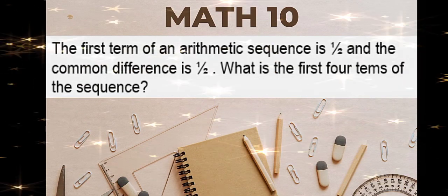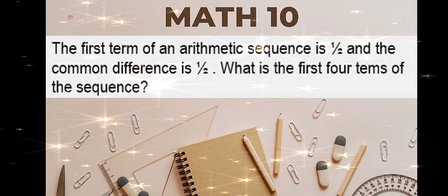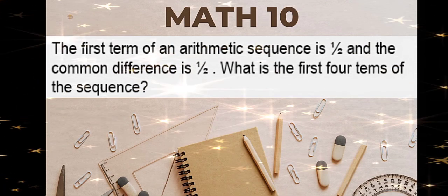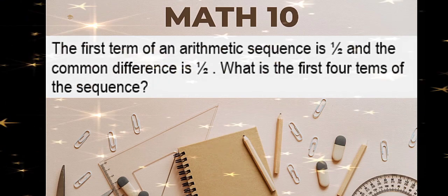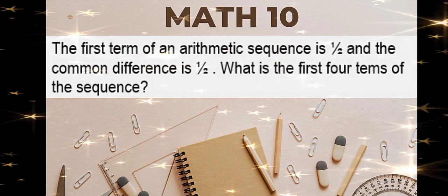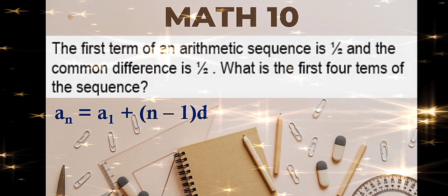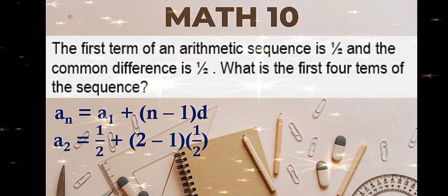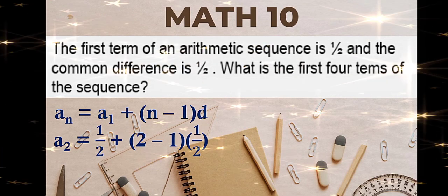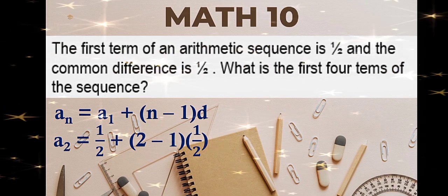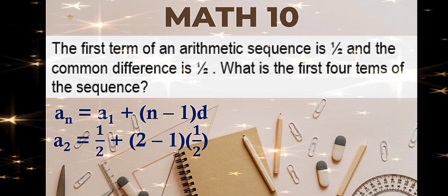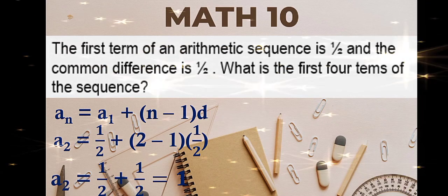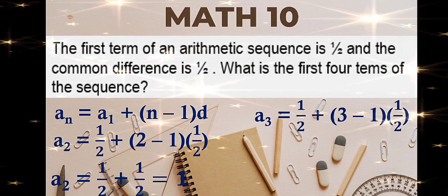The first term of an arithmetic sequence is 1/2 and the common difference is 1/2. What is the first four terms of the sequence? We're looking for the first four terms given the first term and the common difference. Using the general formula for the nth term, with n equal to 2: 1/2 plus (2 minus 1) times the common difference 1/2. Simplify to get 1. That is your second term.